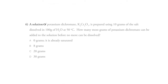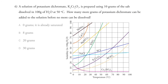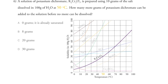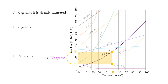Number six: a solution of potassium dichromate is prepared using 10 grams of salt dissolved in 100 grams of water at 50°C. How many more grams of potassium dichromate can be added before no more can be dissolved? We look at this particular salt at 50 degrees — we've already added 10 grams and we want to know how many more we can add before hitting the solubility limit. Looking at the difference between 10 and 30 on the graph, the answer is 20 grams of salt.